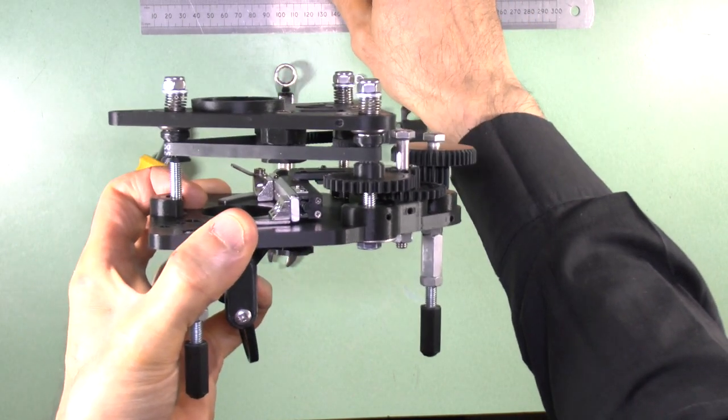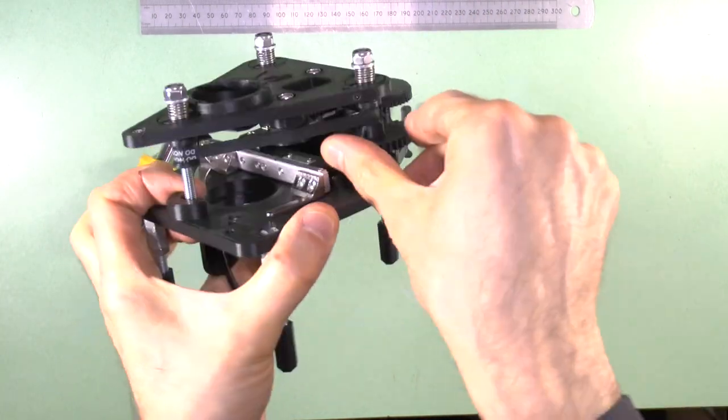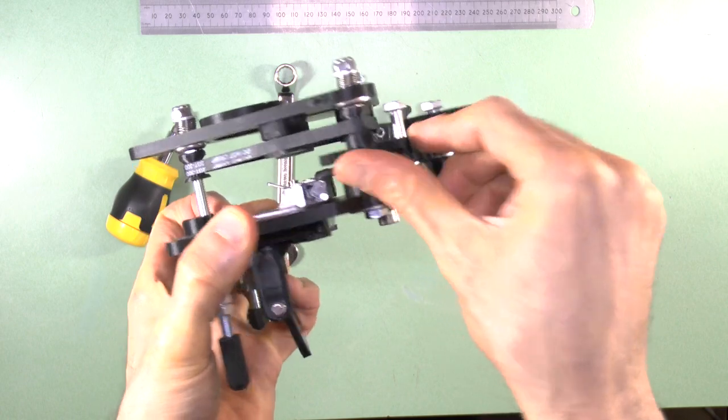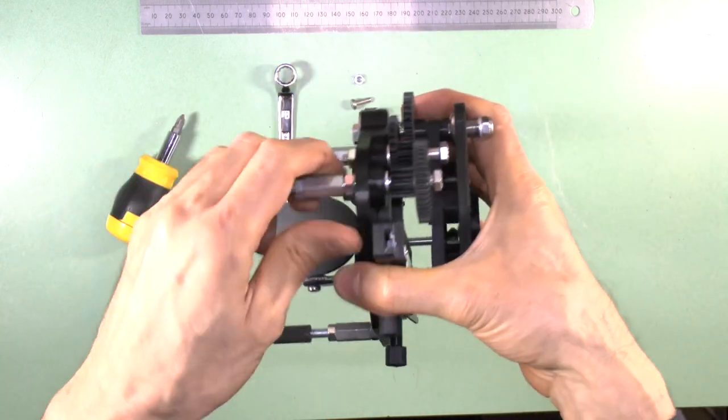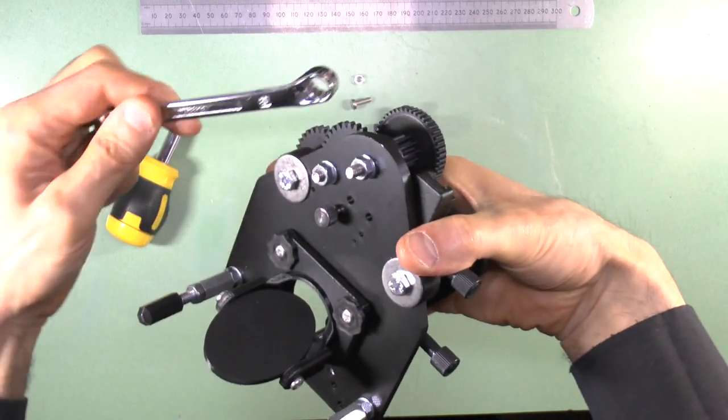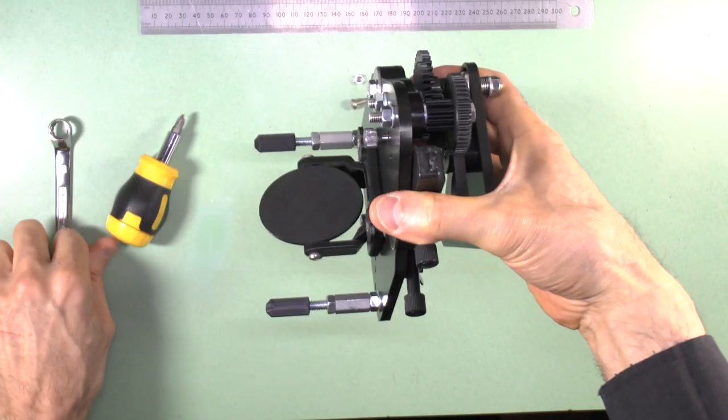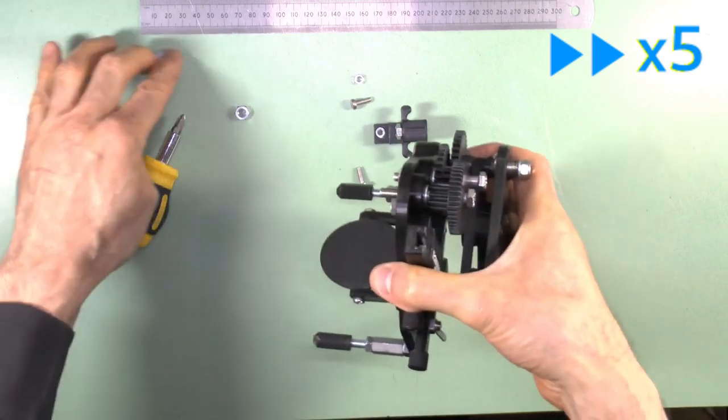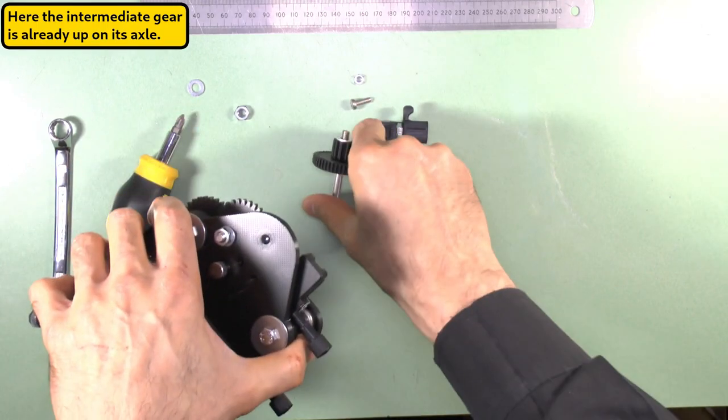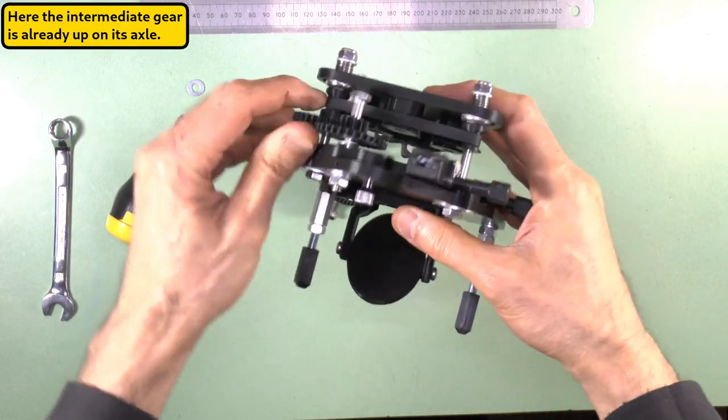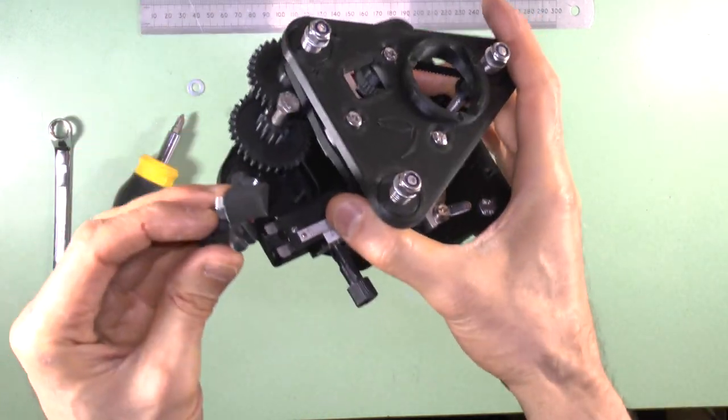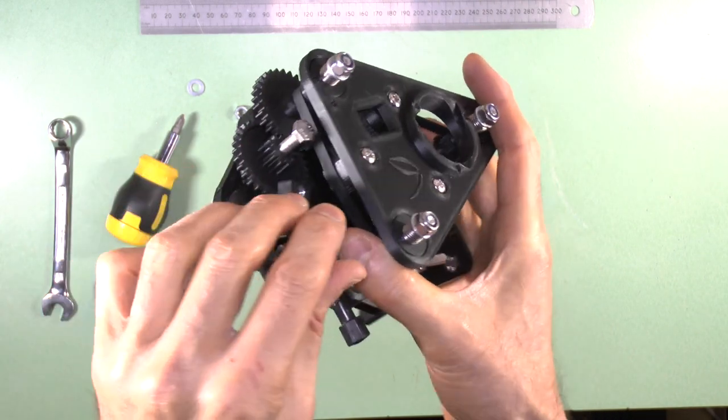Now, with the stage raised to its highest limit before the springs fold in on themselves, remove the fine gear and its axle bolt completely. And raise the intermediate gear on its axle till it contacts the coarse gear. Slip in the XY stabilizer and lower the intermediate gear back to its normal position.